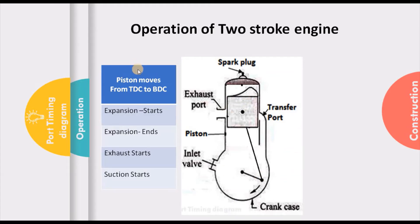The two-stroke engine cycle is completed in only two strokes. We consider the piston initially moving from TDC to BDC and then from BDC to TDC. As the piston starts moving from top dead center, expansion is happening — combustion has occurred and the piston is being pressed down. The expansion starts from TDC and continues until the piston is just above the exhaust port.